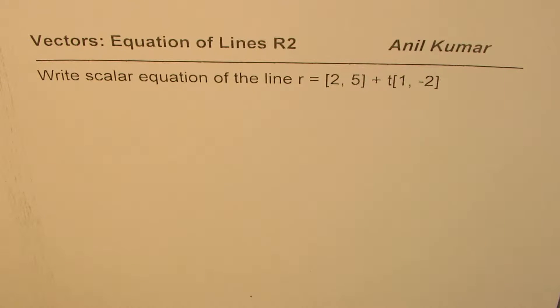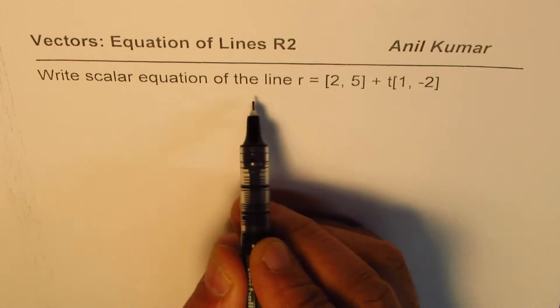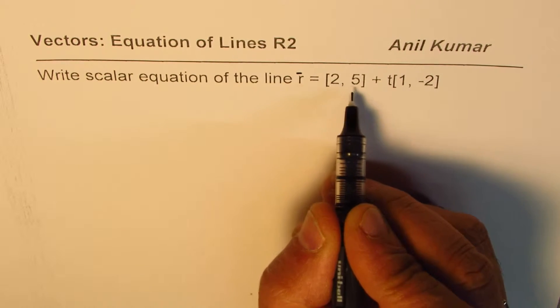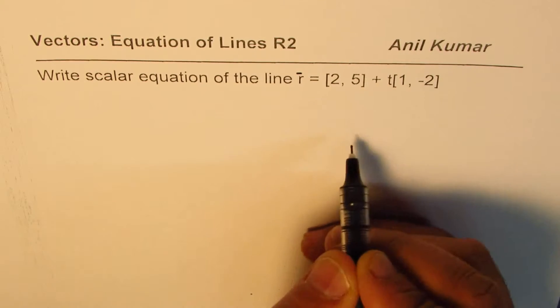I am Anil Kumar and in this video we will learn how to convert vector equation of a line into scalar equation. The question here is write scalar equation of the line r equals [2,5] plus t times [1,-2].